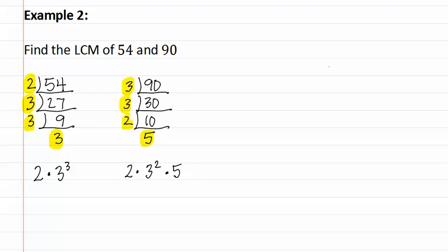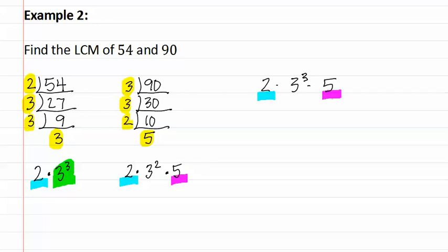Now we move on to step two. Step two was to use all of the unique factors, which means we will be needing a two, a three, and a five, as those are the numbers listed in the prime factorizations. We now must pick the ones with the highest exponents. For the two, there is only one in each, so we only put one into the answer as the highest exponent is one. Next, we look at the threes — there are three threes or two threes. We want to use the higher exponent, or three threes. And lastly, we look at the five — there is only one five, so we only put one five in the answer. Now we must multiply this prime factorization together. Two times three to the third — which is three times three times three, or twenty-seven — times five.